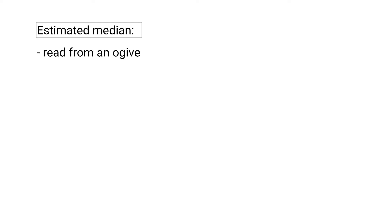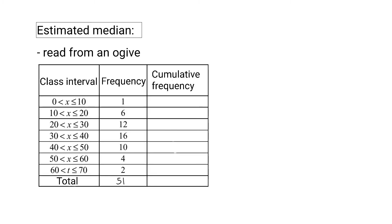To determine the estimated median of a set of grouped data we are going to read it from an ogive. For this we first need to set up a cumulative frequency table. Cumulative frequency means that you add up all the frequencies. So our second cumulative frequency will be 1 plus the next 6, and to that we add the next 12 to get 19, and continue like this all the way up to 51. The final value in your cumulative frequency column should be the same as the total of your frequency column. Each value in the cumulative frequency column indicates the number of data values in that class or any class smaller than that. For example, 35 means that 35 of the values in this data set lie in the class of 30 to 40 or any of the smaller classes.